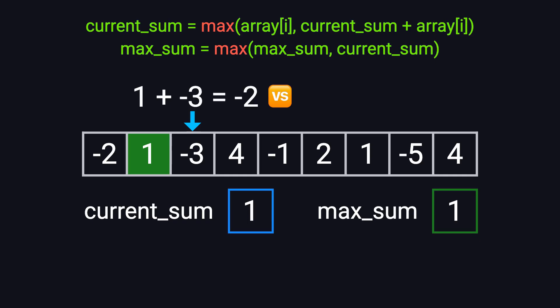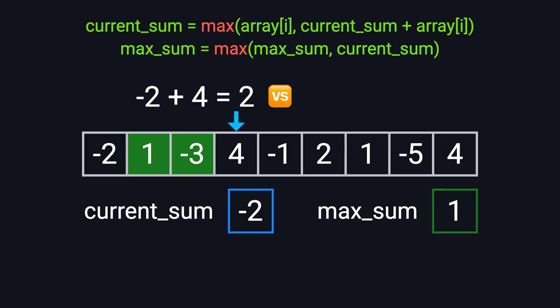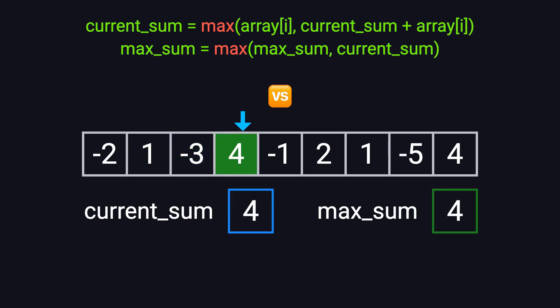Add -3 to current_sum: 1 + (-3) = -2. Or start fresh with -3. -2 is better, so we continue. current_sum becomes -2, max_sum stays 1. Next is 4. Add it to current_sum: -2 + 4 = 2. Or just take 4 by itself. 4 is better, so we reset again. current_sum becomes 4, and max_sum becomes 4. Next up is -1. 4 + (-1) = 3. That's better than just -1, so we continue. current_sum is now 3, max_sum stays 4.